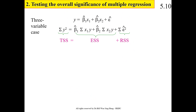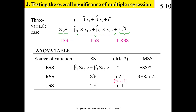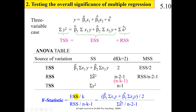For testing the overall significance of multiple regression in the three-variable case — y, x1, and x2 — the total sum of squares equals the explained sum of squares plus the residual sum of squares. The ANOVA table shows explained sum of squares with 2 degrees of freedom, residual sum of squares with n minus 2 minus 1 degrees of freedom, and their respective mean sum of squares. The F statistic is the ratio of these two mean sum of squares.